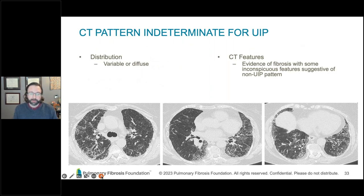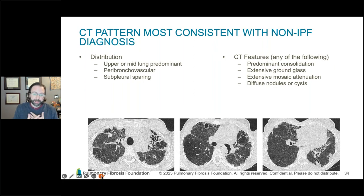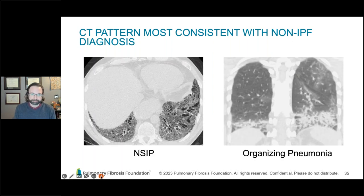An indeterminate pattern means imagers cannot determine the diagnosis confidently, and the likelihood of UIP or IPF is much lower. Many of these cases will require biopsy or multidisciplinary discussion. Cases in the alternative diagnosis category clearly look like other diseases — sarcoid, hypersensitivity pneumonitis, nonspecific interstitial pneumonia (NSIP), or organizing pneumonia — and these look distinctly different from UIP pattern cases.